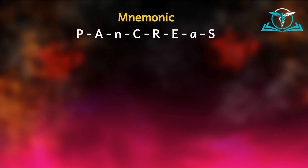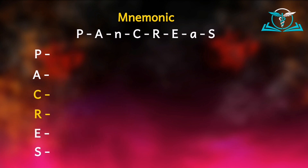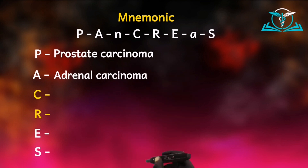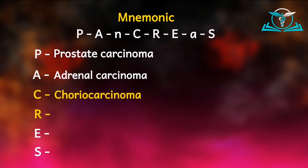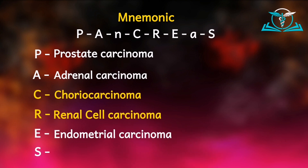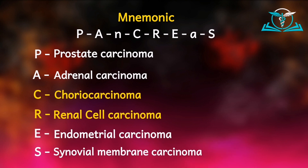So the active letters spell P-A-C-R-E-S: P for prostate carcinoma, A for adrenal carcinoma, C for choriocarcinoma (one of the types of gestational trophoblastic diseases), R for renal cell carcinoma, E for endometrial carcinoma, and S for synovial membrane carcinoma.